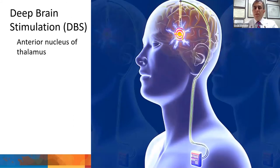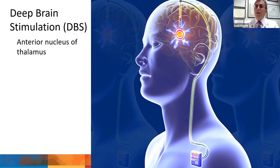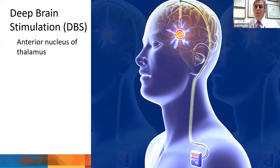Deep brain stimulation involves a pacemaker device in the chest area, with wires tunneled under the skin up to the scalp, passing through a hole through which the electrode goes into the brain to stimulate it and try to stop seizures. This is good for seizures coming from big areas of the brain where other options don't exist. My colleague Dr. Andrew Coe at University of Washington Medical Center implanted the first person in Washington State with this device on July 23rd.